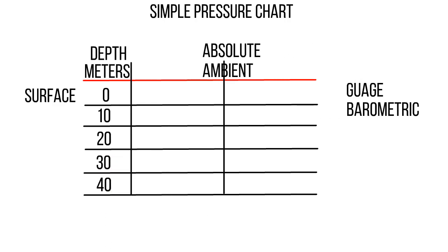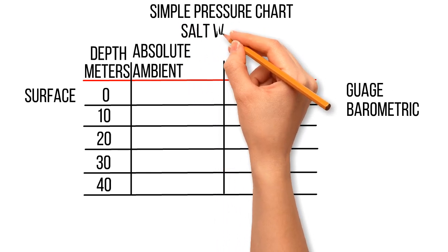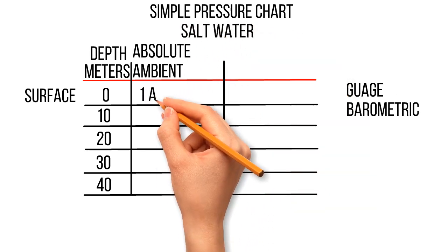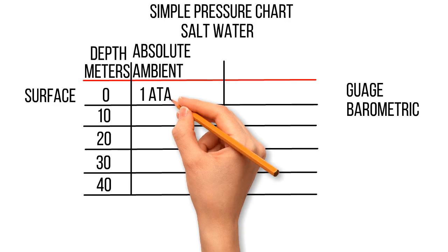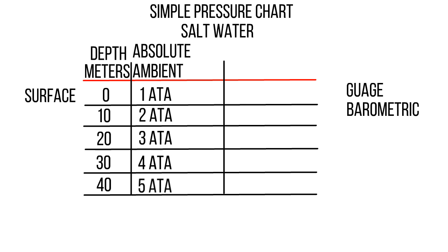The next column is going to be absolute and ambient pressure. Technically there's a difference between the two, but as far as we're concerned it doesn't matter. This is a saltwater chart. At the surface the atmospheric pressure is 1 atm, at 10 metres it's 2, then 3, 4, and 5.